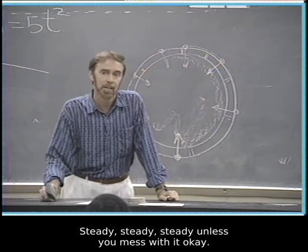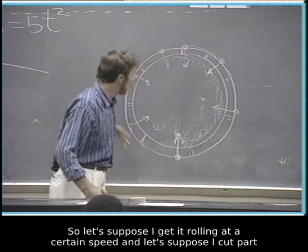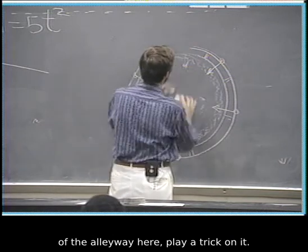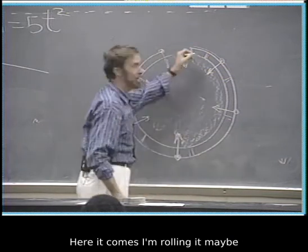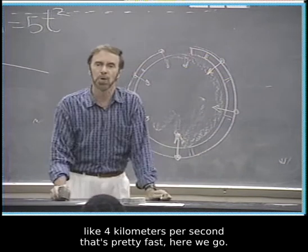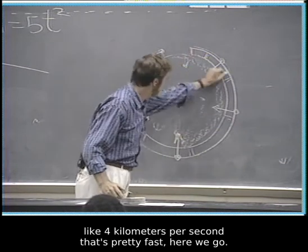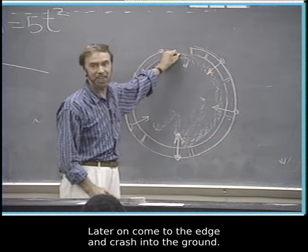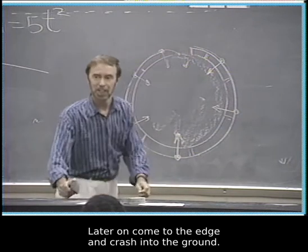So let's suppose I get it rolling at a certain speed, and let's suppose I cut part of the alleyway here - play a trick on it. Here it comes. I'm rolling it maybe like four kilometers per second - it's pretty fast. Here we go. It comes to the edge and crashes into the ground. Roll it faster - crash into the ground over there. Roll it faster - boom, boom - still crashes into the ground.